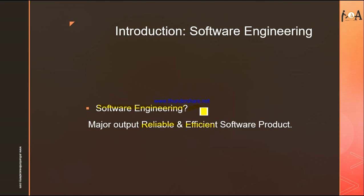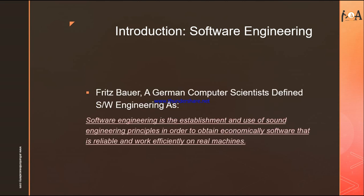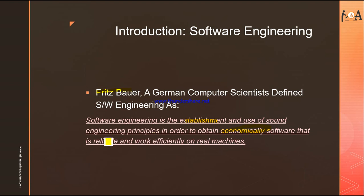Meanwhile, Fritz Bauer, a German computer scientist, defined software engineering as: 'Software engineering is the establishment and use of sound engineering principles in order to obtain economically software that is reliable and works efficiently on real machines.' So according to Fritz Bauer, software engineering is the establishment and use of sound engineering principles to obtain economically reliable software that works efficiently on real machines. This kind of process, principles, and methodologies are called software engineering.